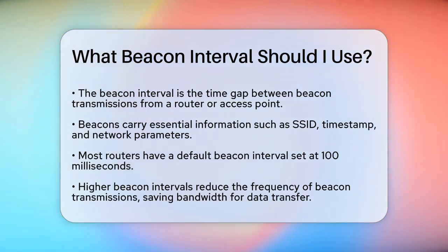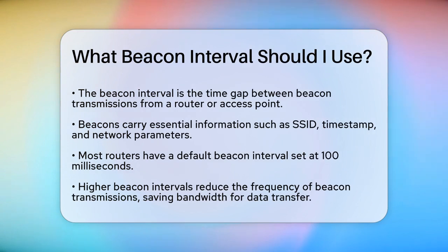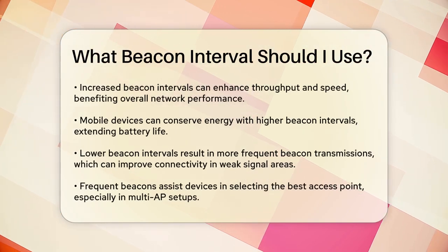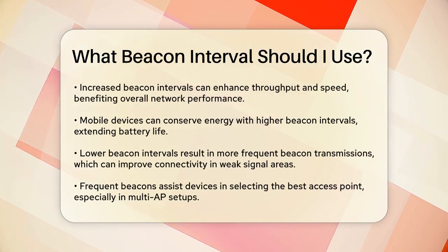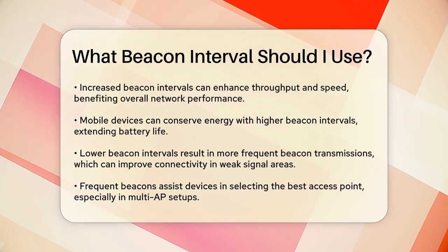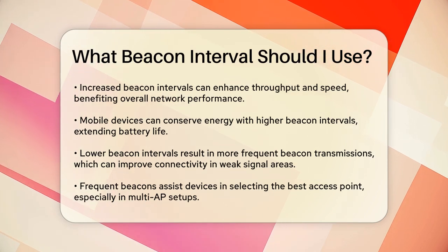High beacon interval: a higher beacon interval means beacons are sent less frequently. This can be beneficial because it reduces the bandwidth used for beacon transmissions, allowing more bandwidth for actual data transmission. As a result, you might see better throughput and speed. Additionally, your mobile devices can save energy by sleeping between beacon broadcasts, which extends battery life.